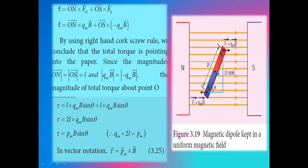Tau vector = ON vector × Fn vector + OS vector × Fs vector. The formula for torque is force into perpendicular distance. Here the force is Fn vector, perpendicular distance is ON, and OS is the perpendicular distance for force Fs.